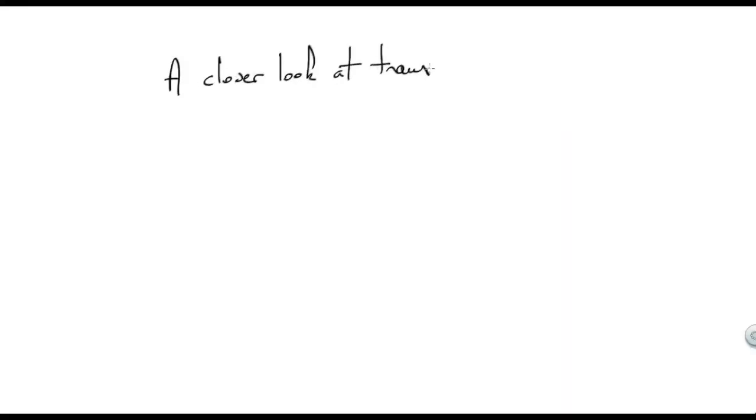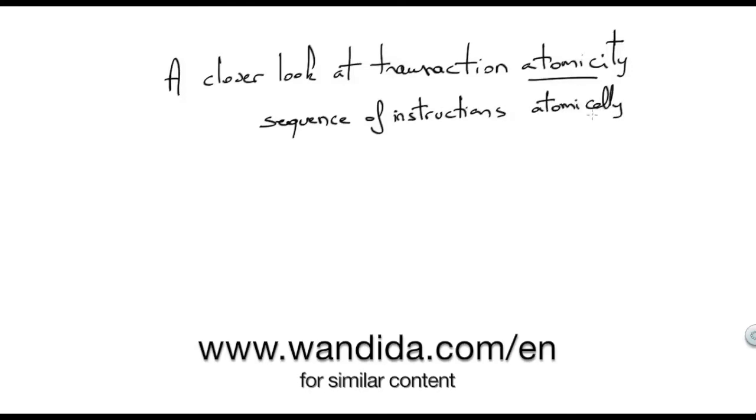A closer look at transaction atomicity. A transaction is a sequence of instructions that needs to execute atomically. Roughly speaking, a transaction executes and terminates in one of two states, abort or commit.